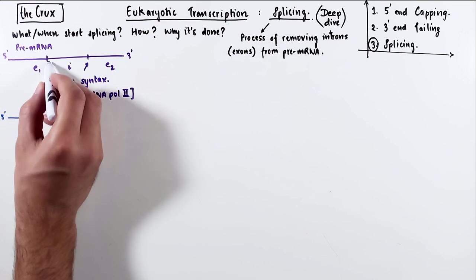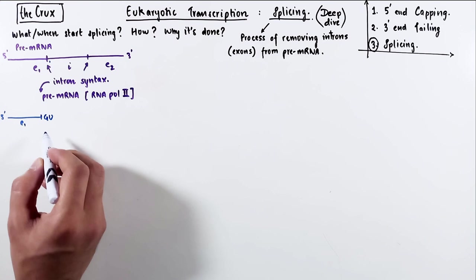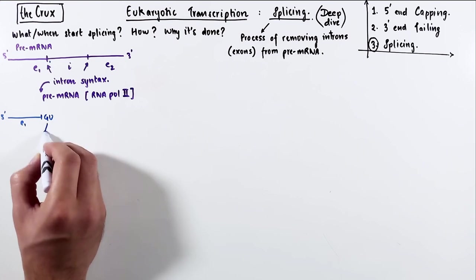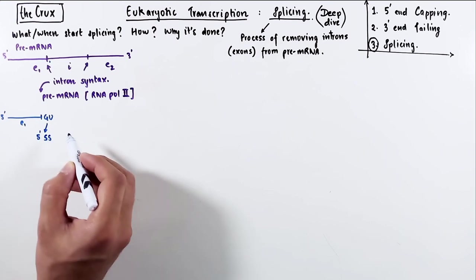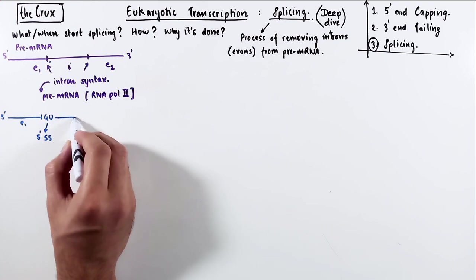Following immediately at the end of the exons, or the other way of saying is that the 5' end of the intron, we usually see a consistent presence of guanine and uracil nucleotides. This GU location is called the 5' splice site.